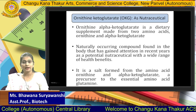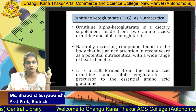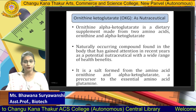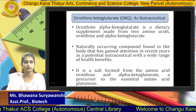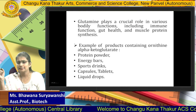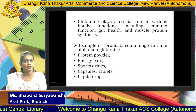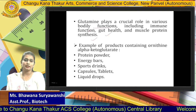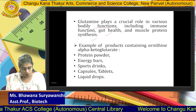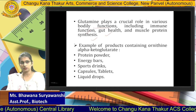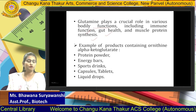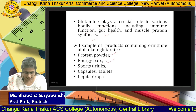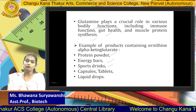OKG provides a wide range of health benefits. It is basically in the form of a salt of the amino acids ornithine and alpha-ketoglutarate, and together it forms a precursor of the essential amino acid glutamine. Glutamine plays a crucial role in various bodily functions such as immune function, gut health, and muscle protein synthesis — it is a very vital amino acid. OKG is available in different formulations: protein powder, energy bars, sports drinks, capsules, tablets, and even in the form of liquid drops.